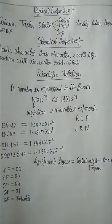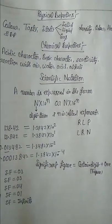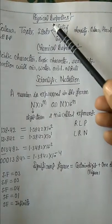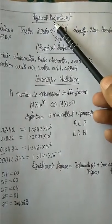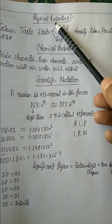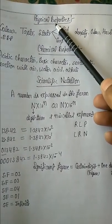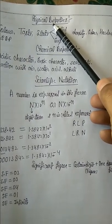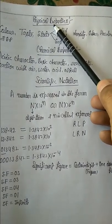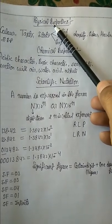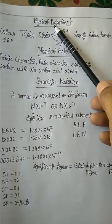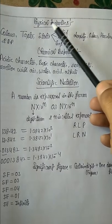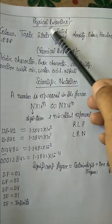In this chapter I am telling you about physical properties. What are physical properties? The properties of a substance which can be determined without changing its composition are called physical properties.